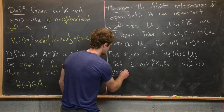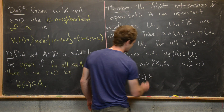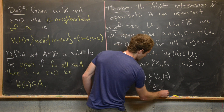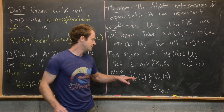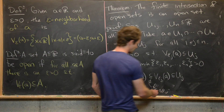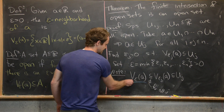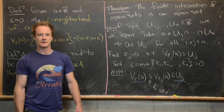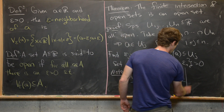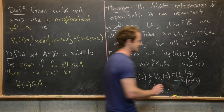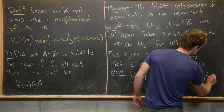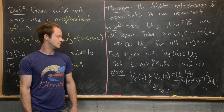We notice that V_epsilon(a) is a subset of V_{epsilon_j}(a) for all j, because epsilon is less than or equal to each epsilon_j. And V_{epsilon_j}(a) is a subset of U_j for all j. So V_epsilon(a) is a subset of U_j for all j, which is equivalent to saying V_epsilon(a) is a subset of the intersection from i=1 to N of U_i — exactly what we needed to show.